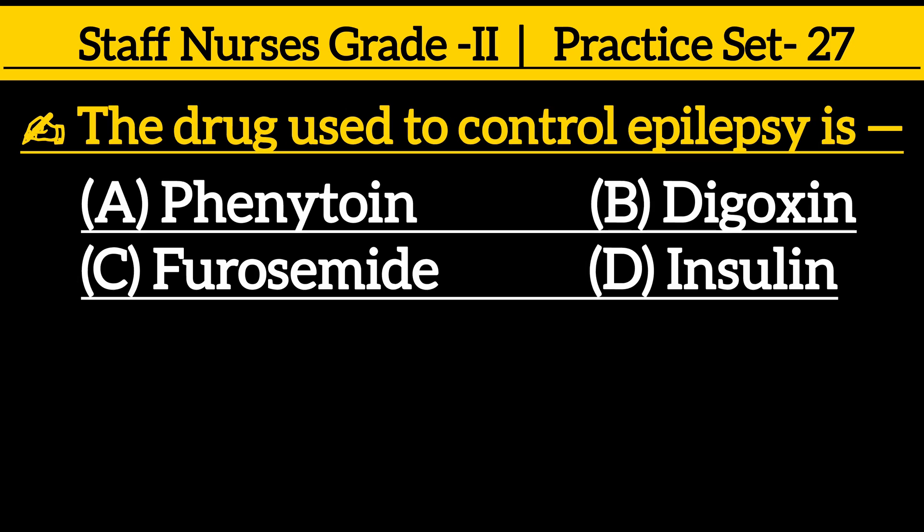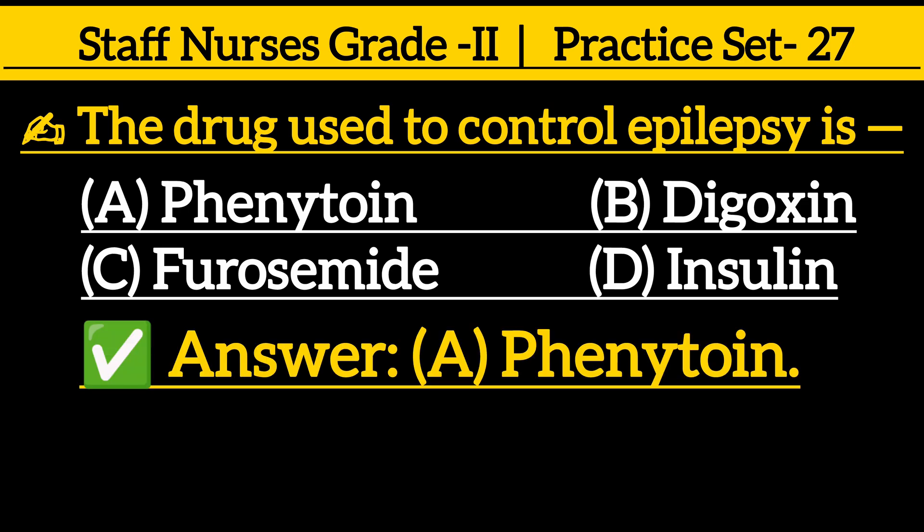Next one: the drug used to control epilepsy is — option A: Phenytoin, option B: Digoxin, option C: Furosemide, option D: Insulin. Correct answer is option A: Phenytoin.